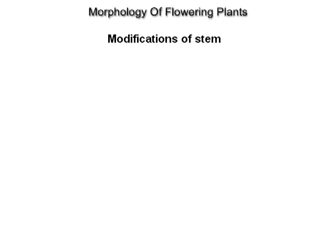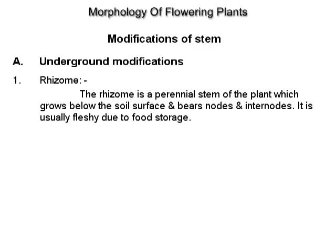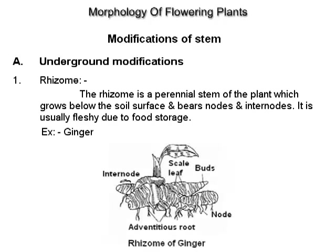Modifications of stem. Underground modifications. Rhizome: the rhizome is a perennial stem of the plant which grows below the soil surface and bears nodes and internodes. It is usually fleshy due to food storage. Example: ginger.